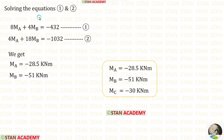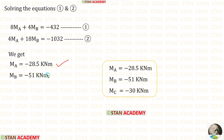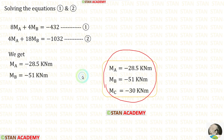We have made two equations and can now solve them using a calculator. After solving, we get the final moments: MA = −28.5 kNm and MB = −51 kNm. We have now calculated all the moments in this analysis.